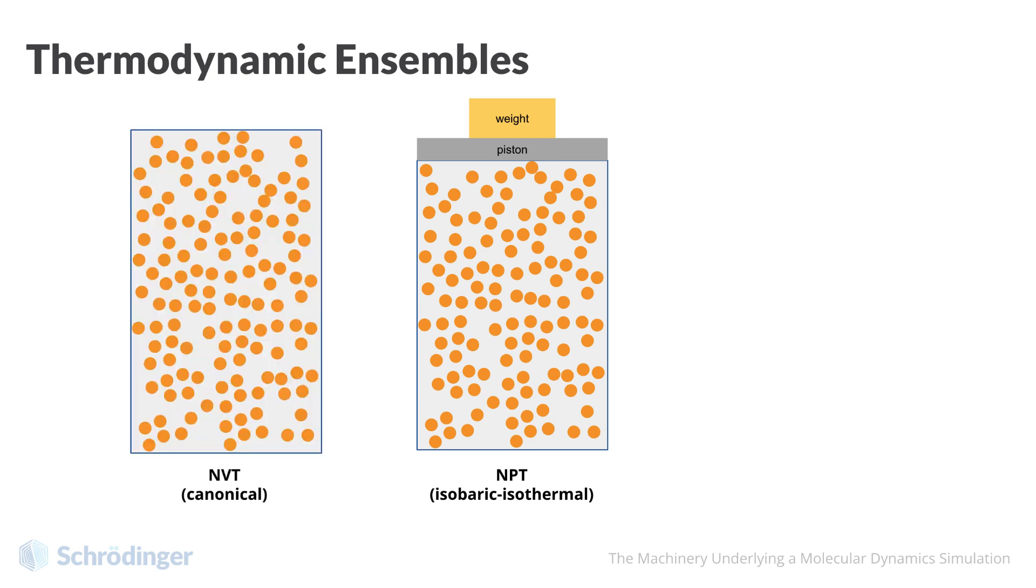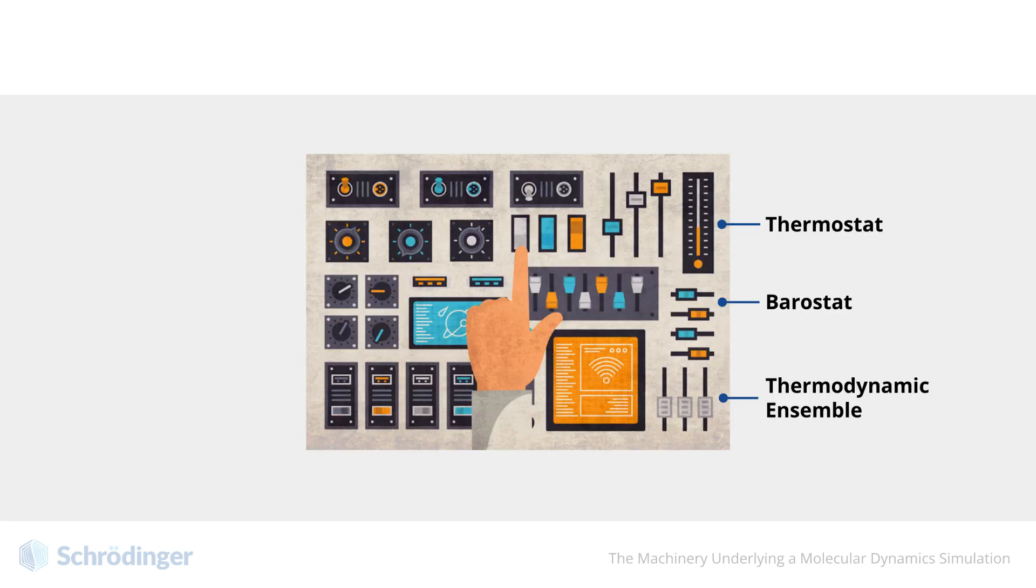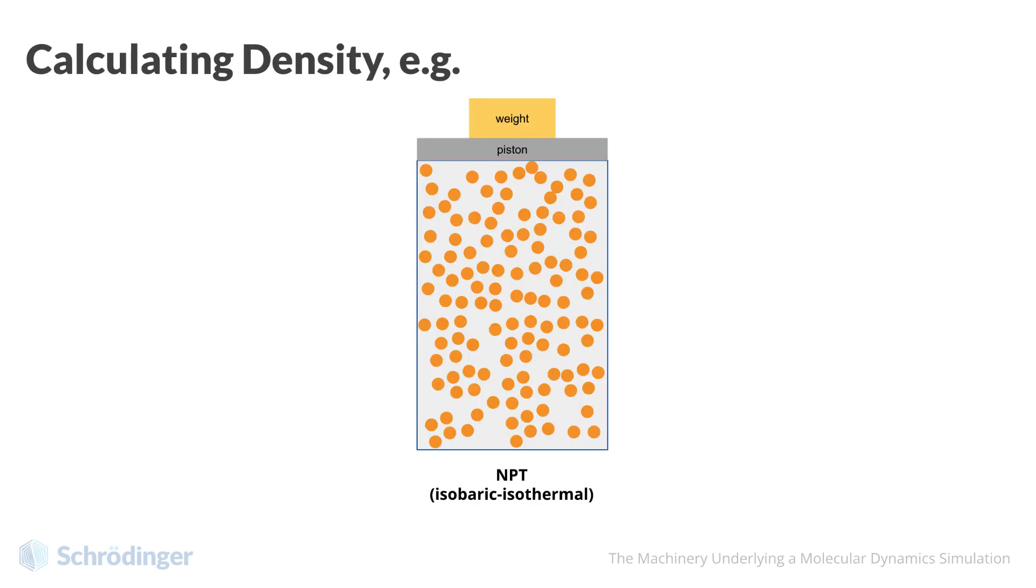To sample in these ensembles, we must control temperature and pressure with a thermostat and barostat respectively. These controls maintain the temperature and pressure by making small adjustments to the system. Certain properties are only accessible in certain ensembles. Individual workflows will have a recommended or required ensemble. For example, the NVT ensemble cannot be used for calculating density or glass transition temperature, because the density will not change when both N and V are held constant.